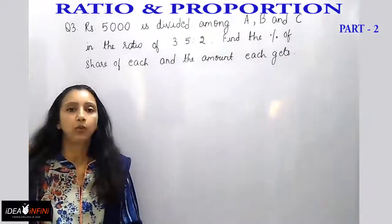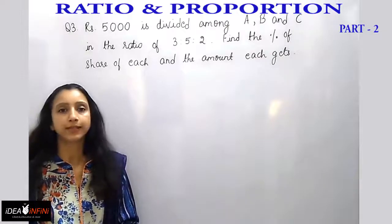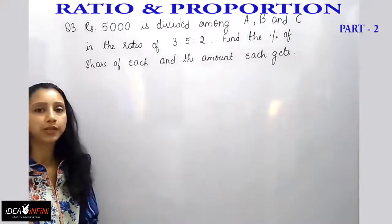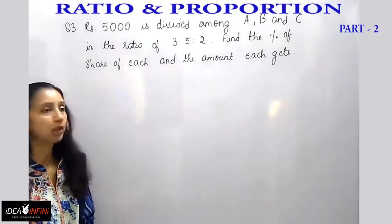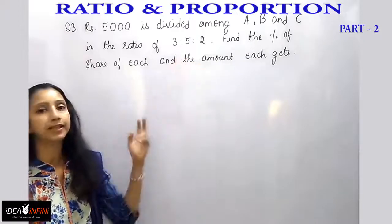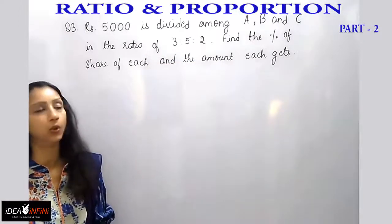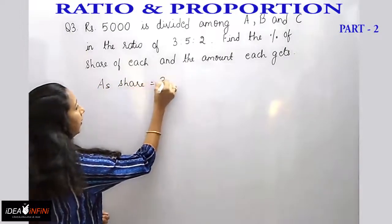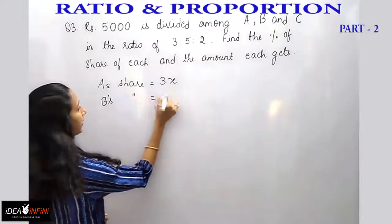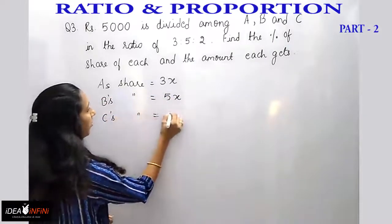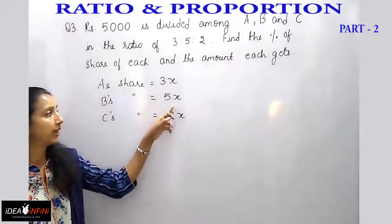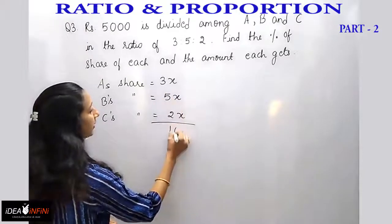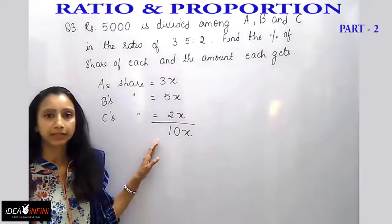Now here is a problem with 3 items in the ratio. Rupees 5000 is divided among A, B, and C in the ratio of 3 is to 5 is to 2 — find the percentage share of each and the amount each gets. A's share is 3x, B's share is 5x, and C's share is 2x, since we don't know the value of x. The total is 3 plus 5 plus 2, which equals 10x.